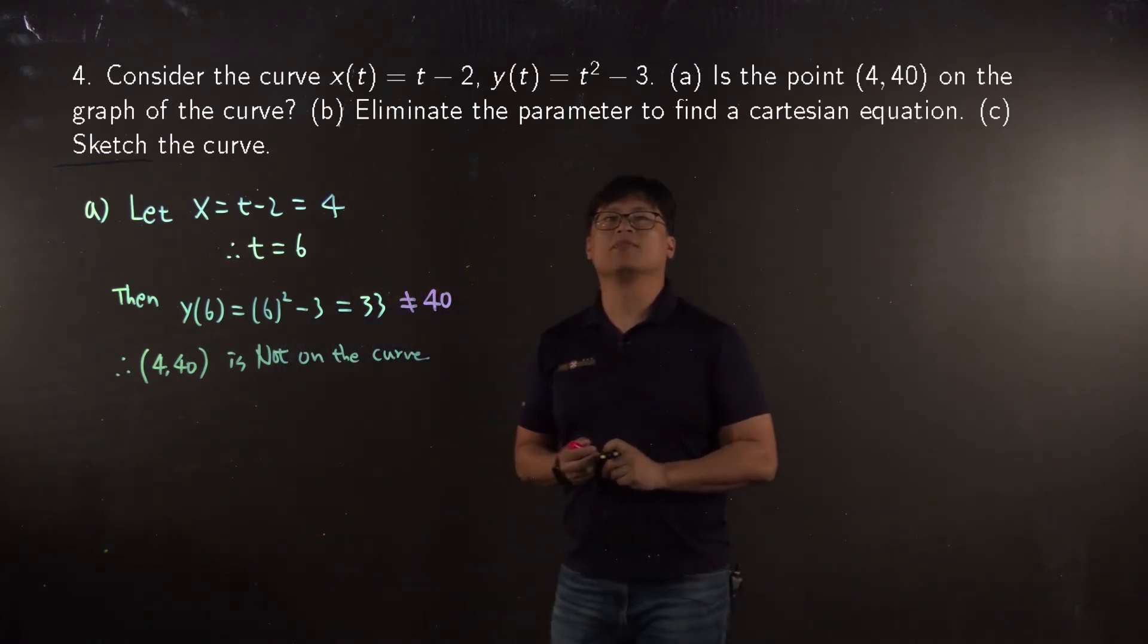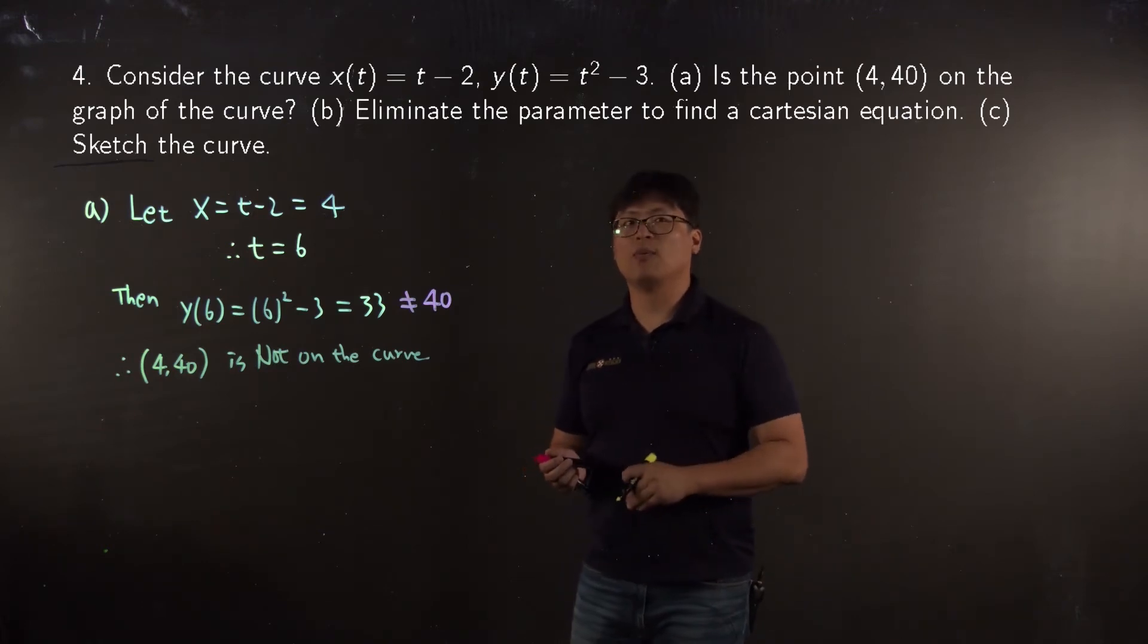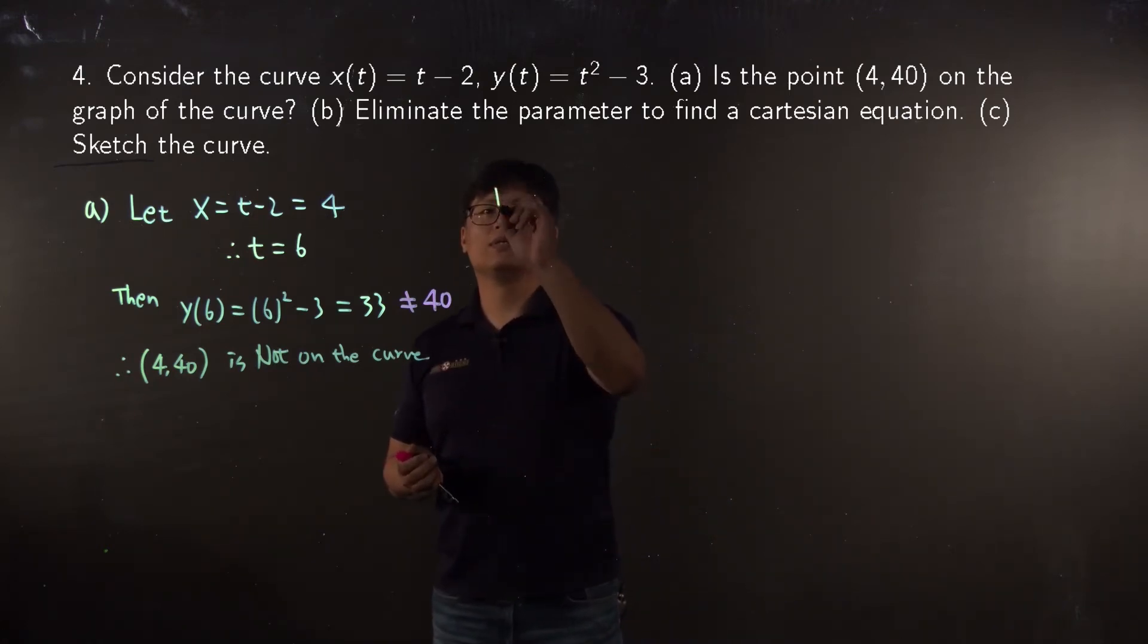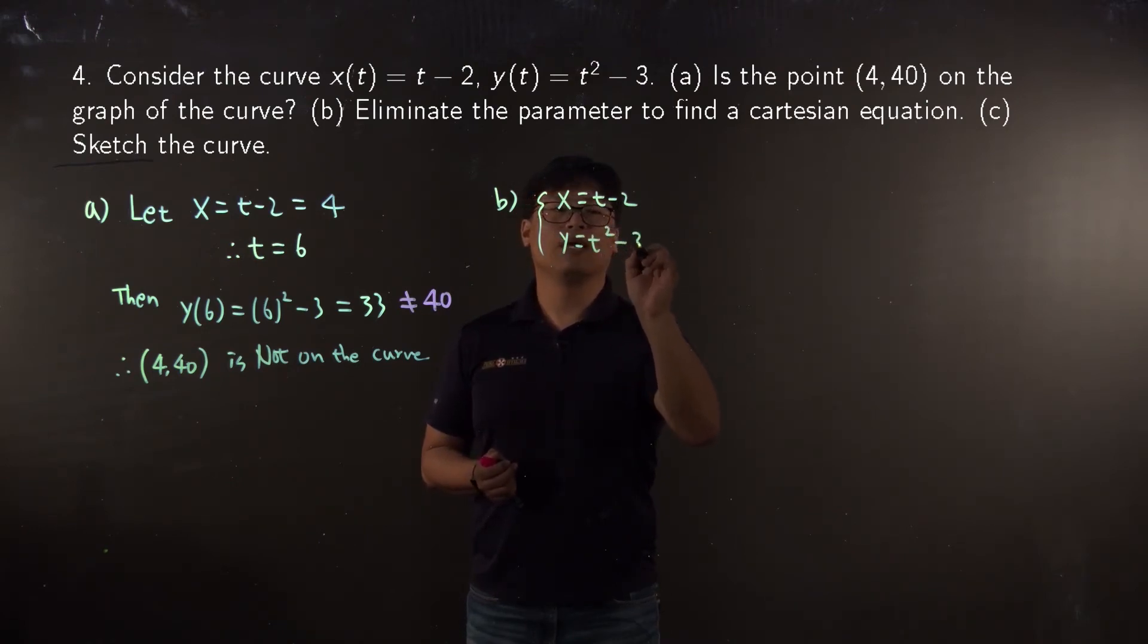Okay, second part, we're going to try to find the Cartesian form of this equation. To do so let me write this as a system: x = t - 2 and y = t² - 3.